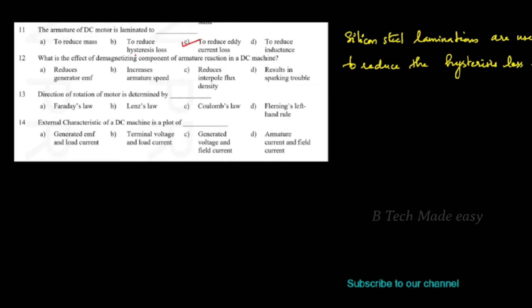We use lamination to reduce hysteresis loss. When it comes to laminating loss, we need to reduce it. The hysteresis loss and the eddy current loss are both addressed. We try to reduce both losses through lamination.